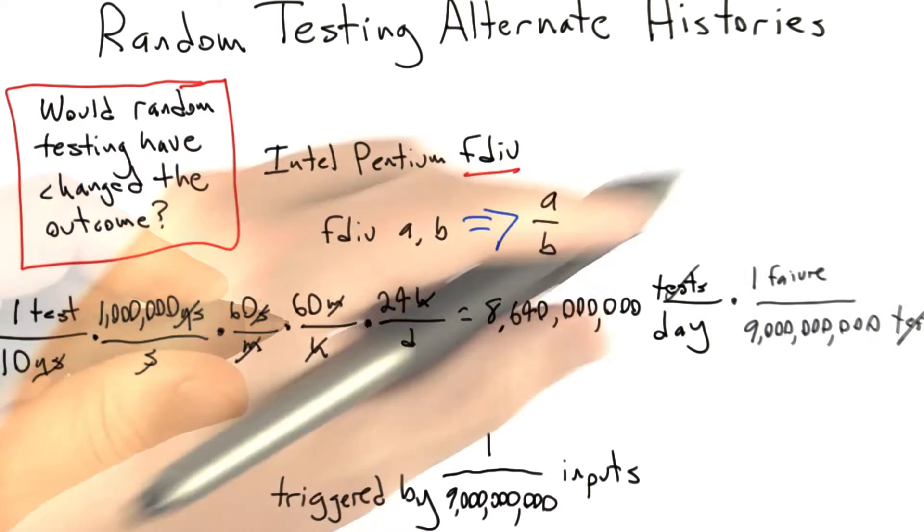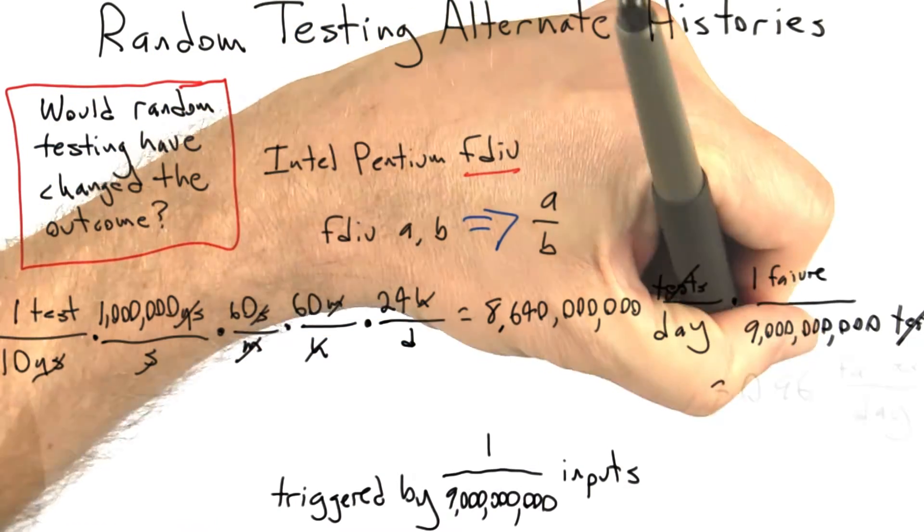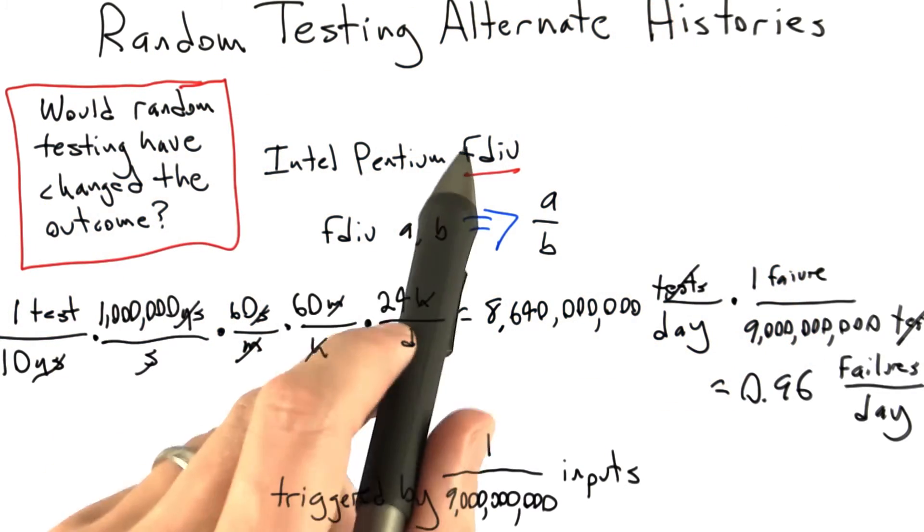Now, if we multiply this testing throughput by the failure rate, we're going to get one failure per 9 billion inputs, or 9 billion tests. We can cancel tests, do the division, and arrive at 0.96 expected failures per day.